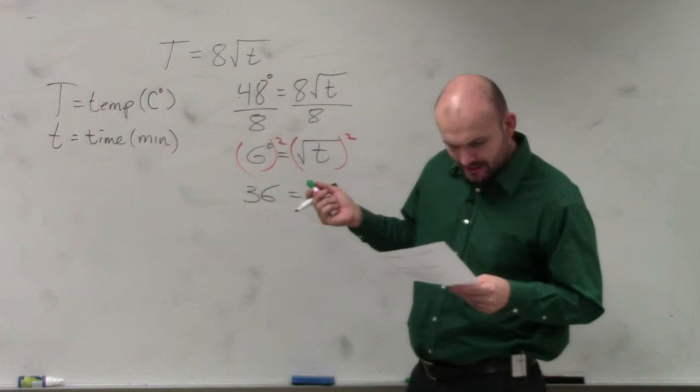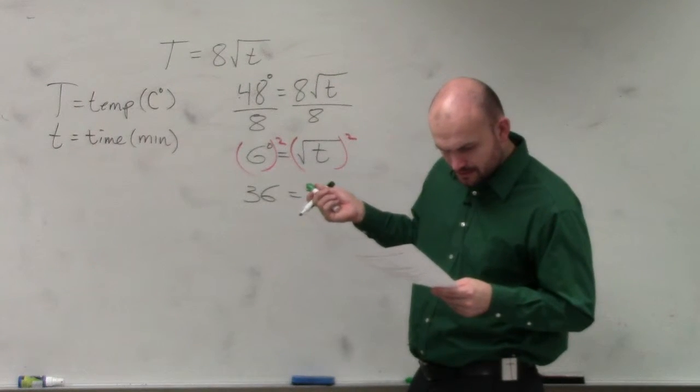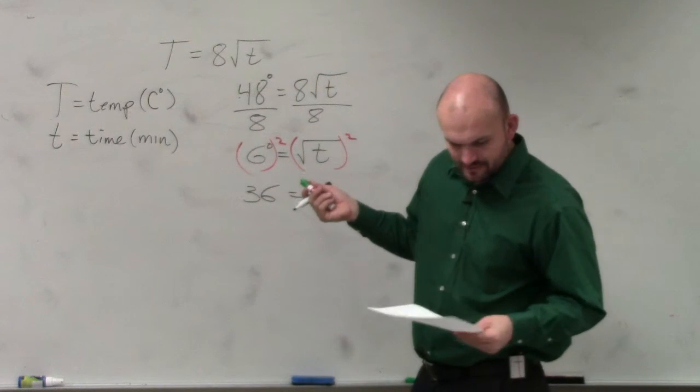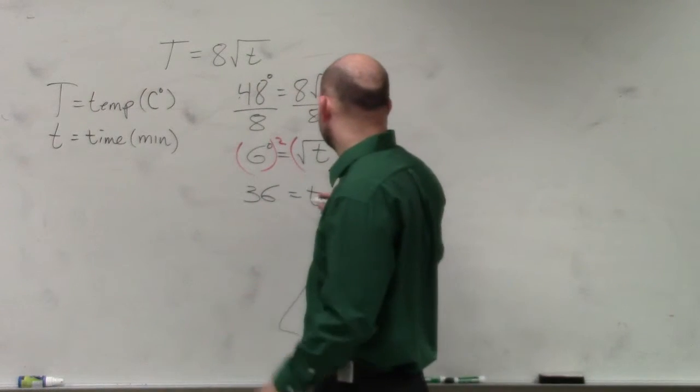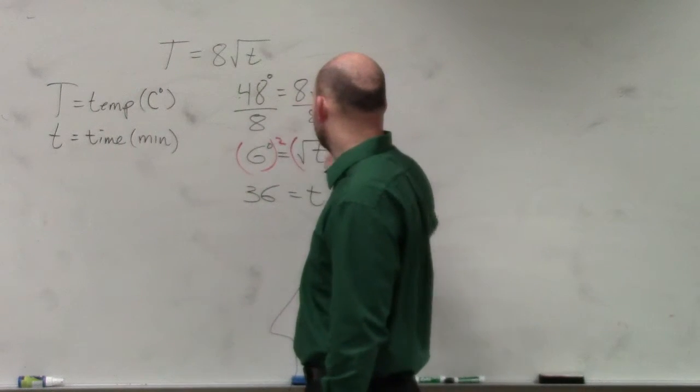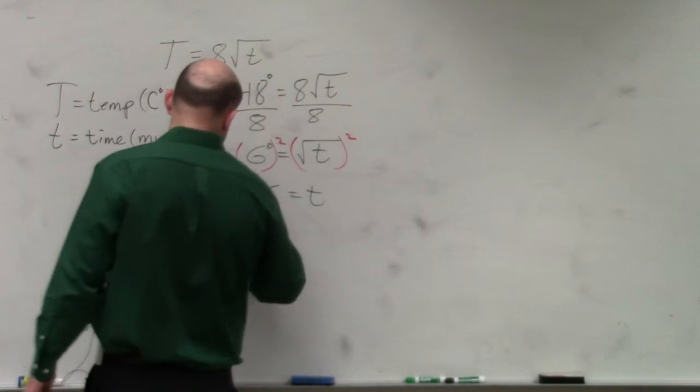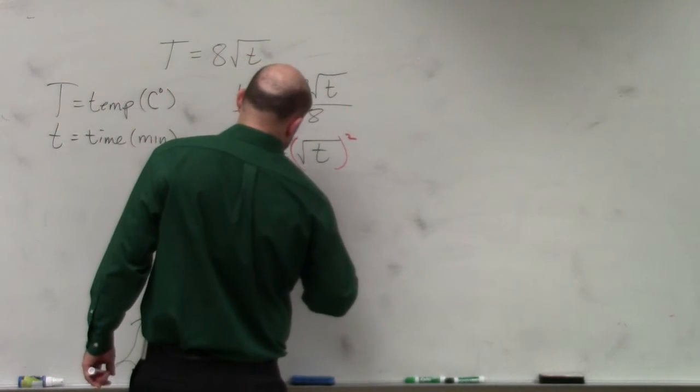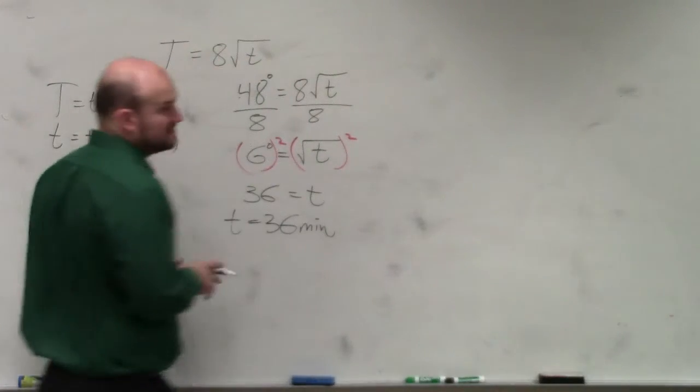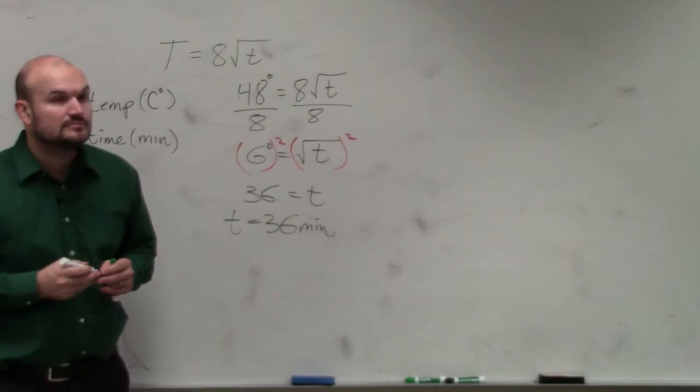Oh, I'm assuming 8 would have knocked it off. So I'm assuming this is - it didn't tell me the degrees on that. But t would be 36 minutes, right? Because t was in time of minutes. Does that make sense?